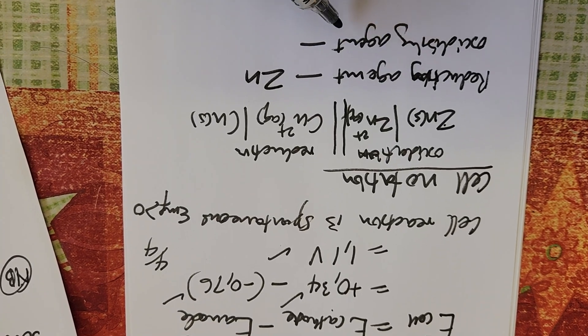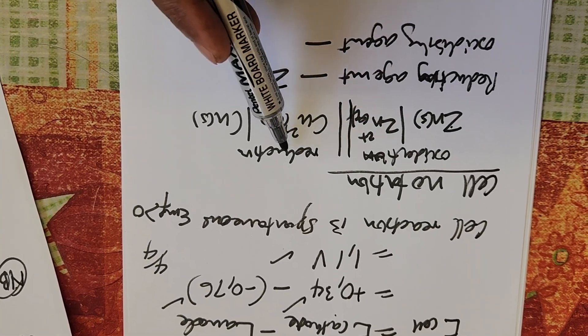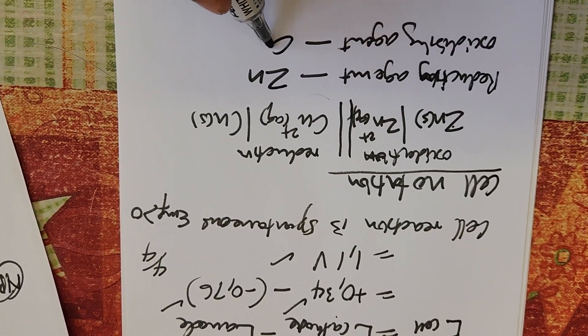Whereas the oxidizing agent is the one that is reduced, which will be your copper ions.